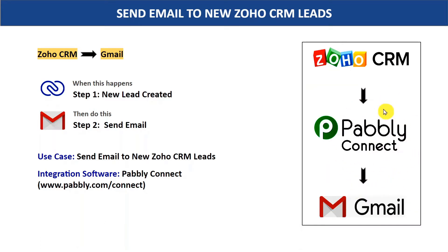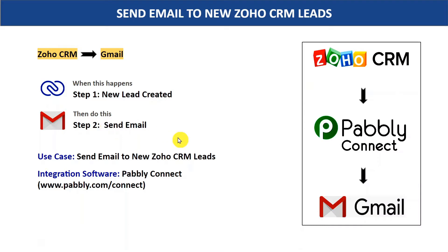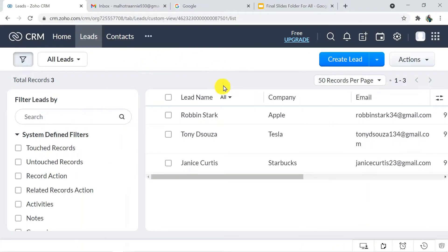That's why we are going to integrate both of these applications with the help of an integration software called Pably Connect, so that whenever a new lead is created in Zoho CRM, Pably Connect will automatically send an email to the same lead via Gmail. There is no requirement for coding skills in the whole video, and any non-technical person can also do this easily.